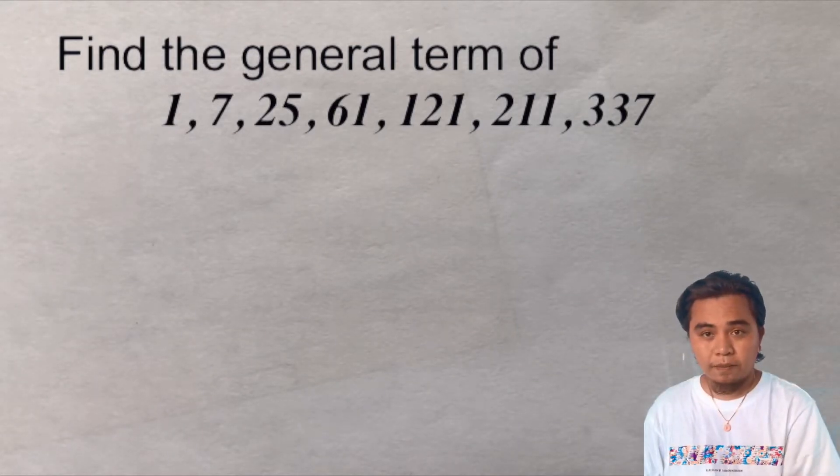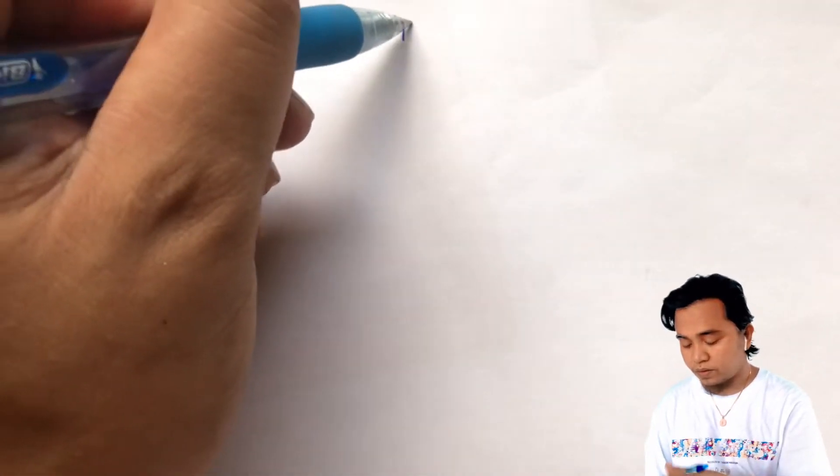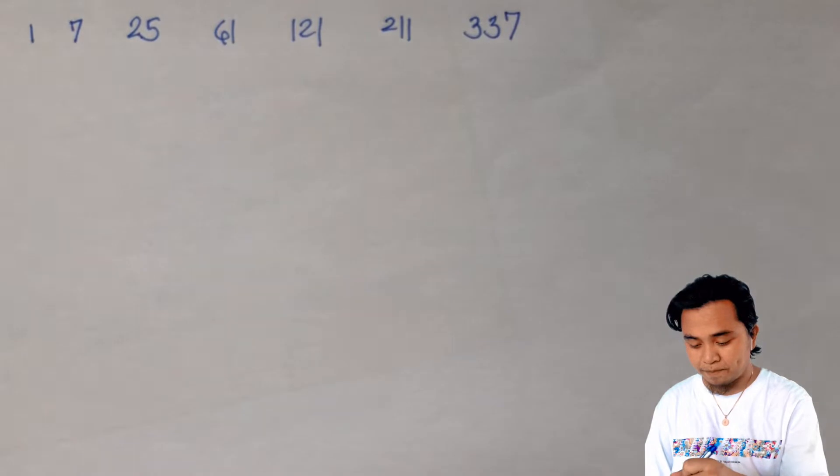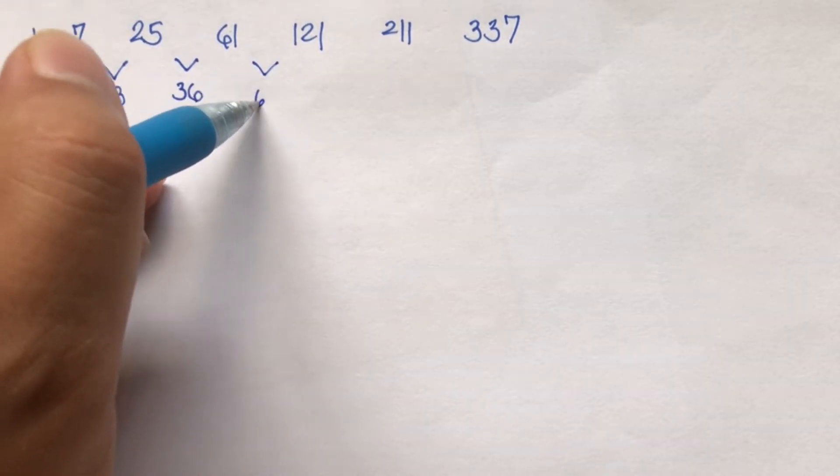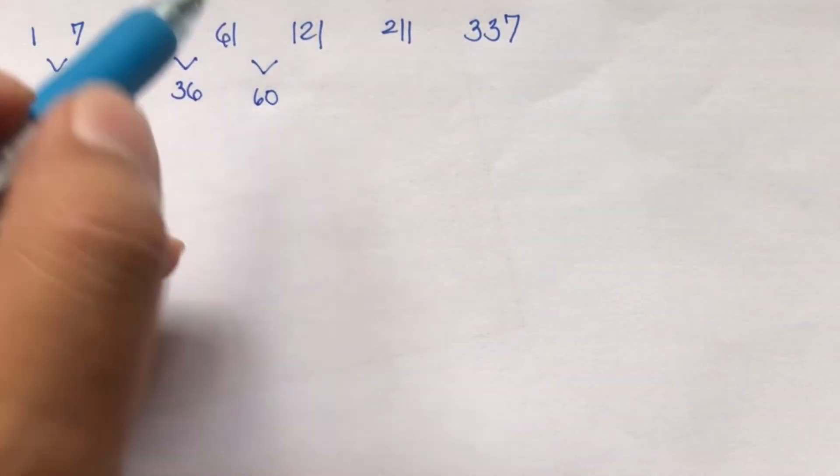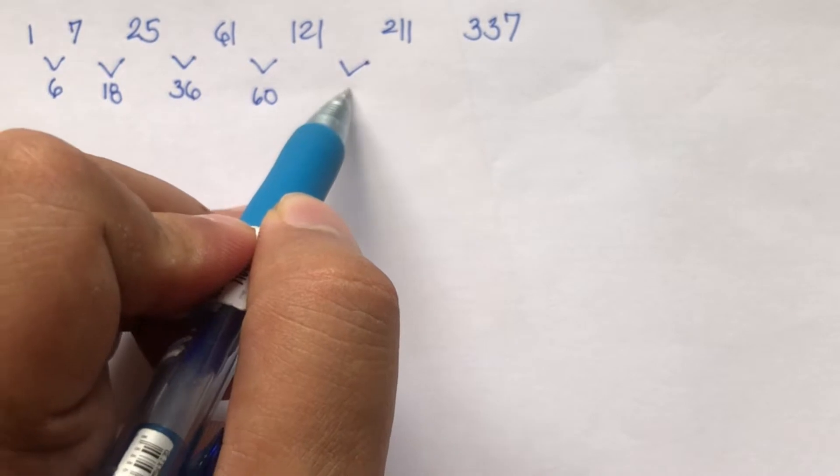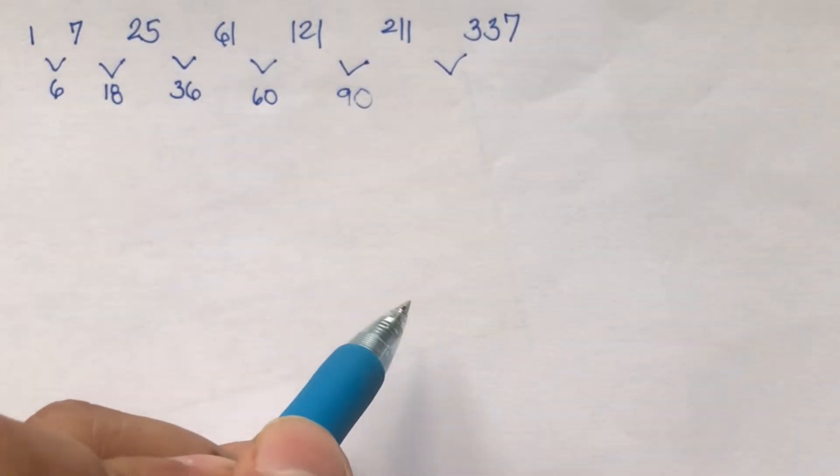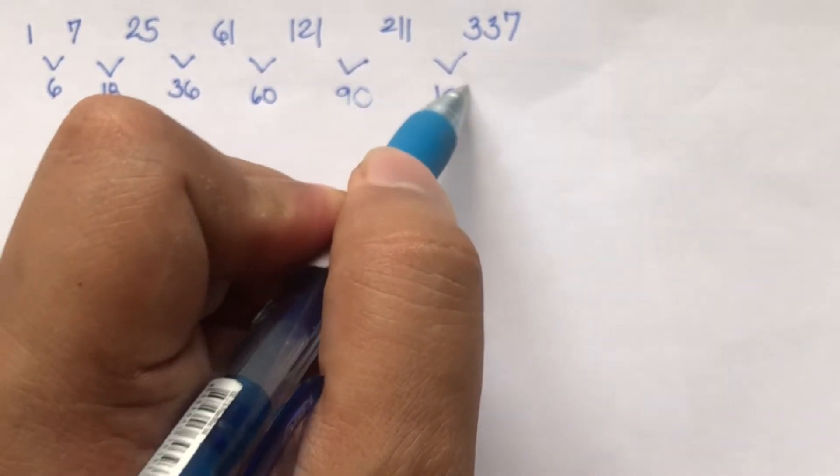So let's verify first if this is a third-degree sequence by getting the interval. The given is 1, 7, 25, 61, 121, 211, 337. So the interval, 1 to 7 is 6, 7 to 25 is 18, 25 to 61 is 36, 61 to 121 is 60, 121 to 211 is 90, then 211 to 337 is 126.